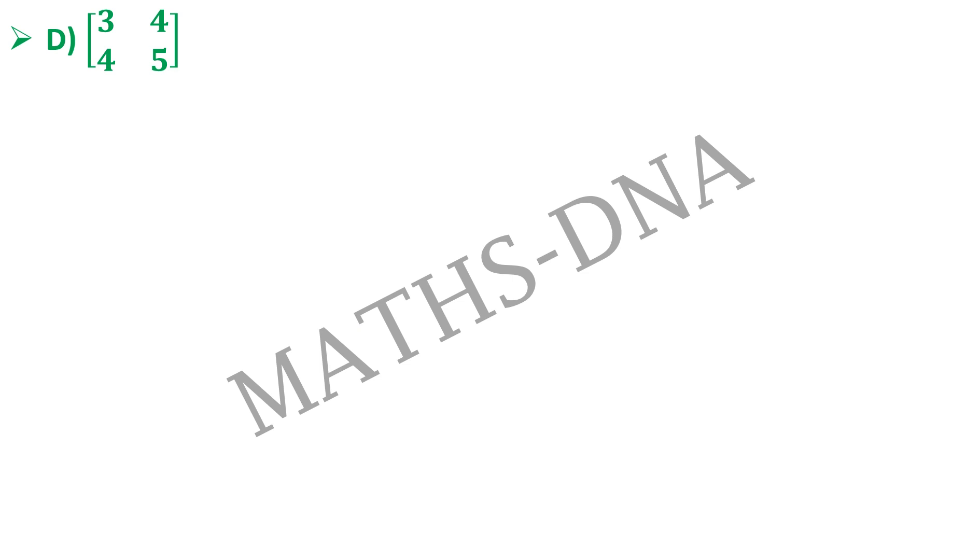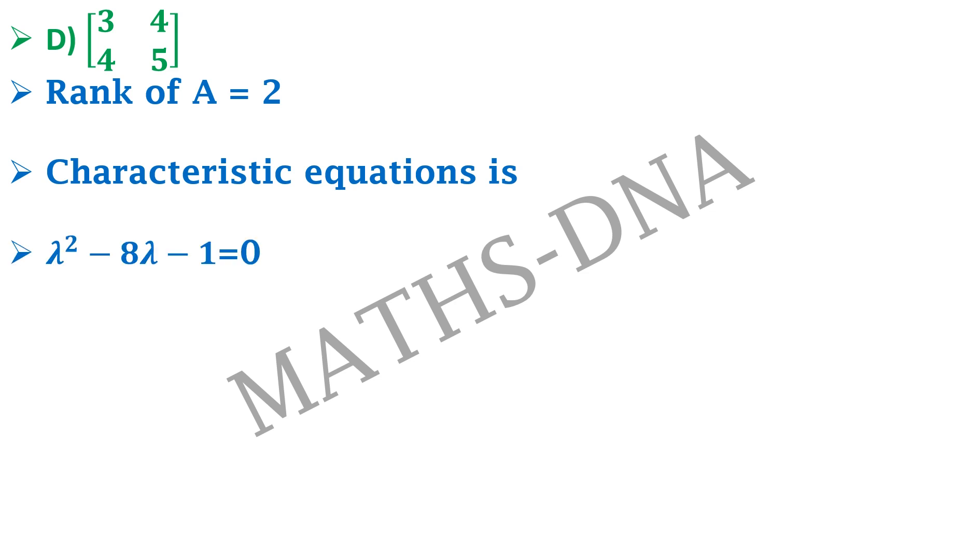And last but not the least option D. 3 4 4 5. Now here rank is easily 2. We are finding eigenvalues with the help of characteristic equation. This will be lambda square minus 8 lambda minus 1 equals to 0. You can easily solve this by finding quadratic solutions. This will be lambda equals to 4 plus minus square root 17 where 4 plus square root 17 is positive and 4 minus square root 17 is negative. So once again the signature of the matrix will be P minus N that is 1 minus 1 that is equals to 0. So option D is correct as well.